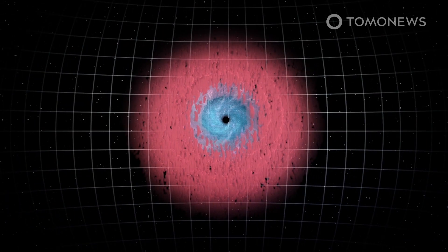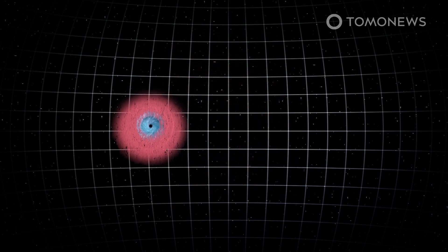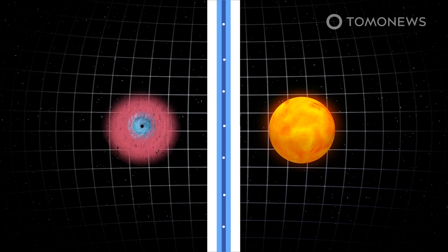Astrophysicists Al Badri and Quatert write in their paper that after factoring in the star, the data suggests LB1 is far more likely to be a sun-sized black hole.